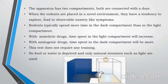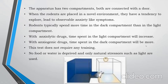It is a natural tendency that when rodents are placed in a novel or unknown environment, they have a tendency to explore, and that leads to observational anxiety-like symptoms. When the rodent is placed into the apparatus, it typically spends more time in the dark compartment than in the light compartment. If the drug has anxiolytic activity, the time spent in the light compartment will increase. Whereas if the drug has anxiogenic activity, the rodent will spend more time in the dark compartment compared to the light compartment.